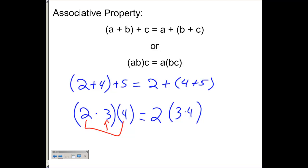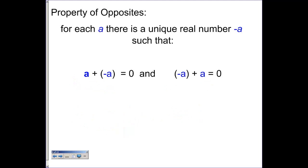Property of opposites, so a number and its opposites, this relates to addition. For each a, there is a unique real number, negative a. This is negative a or sometimes referred to as opposite of a. a might be negative, but the opposite of that then would be positive.